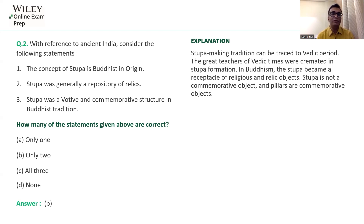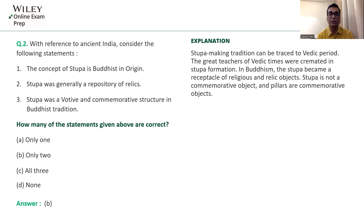The second statement — Stupa was generally a repository of relics — is correct. When a person is cremated and the Mithi Lagana process happens, a semi-circular soil formation is created on the body. This is what is called a Stupa, and it includes the relics of the person, making it a repository of relics.